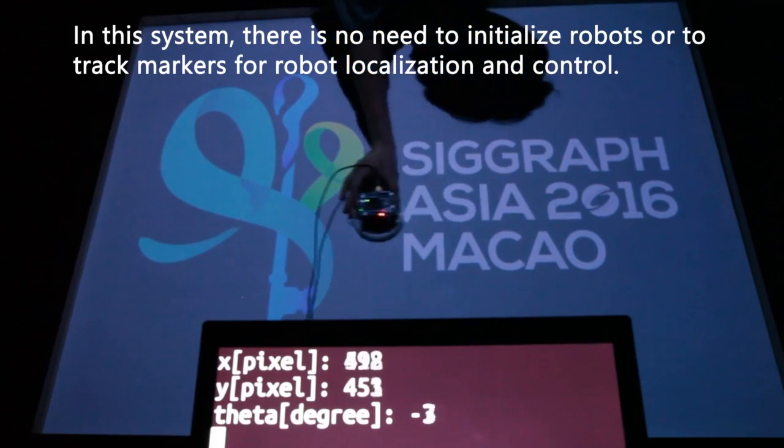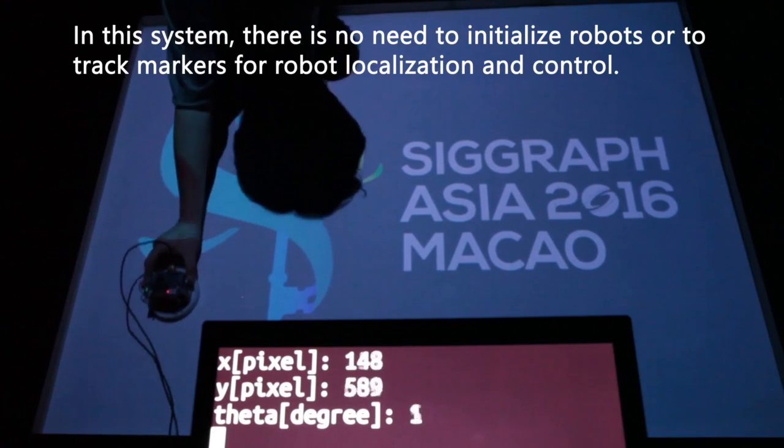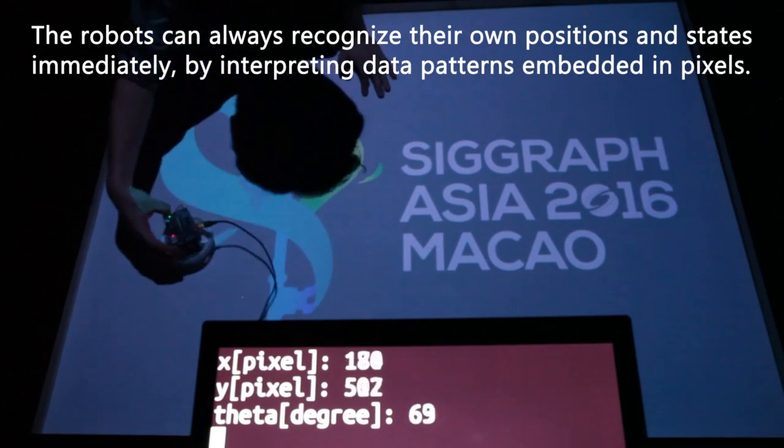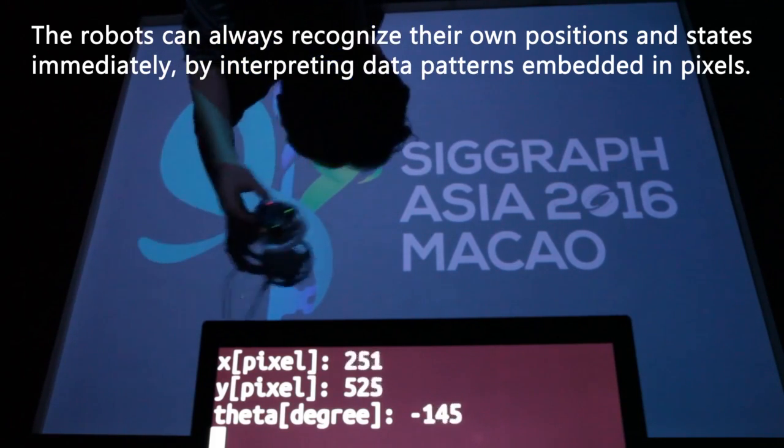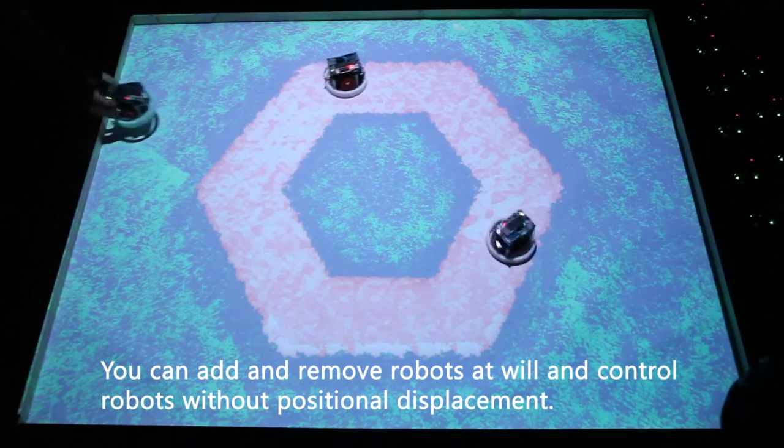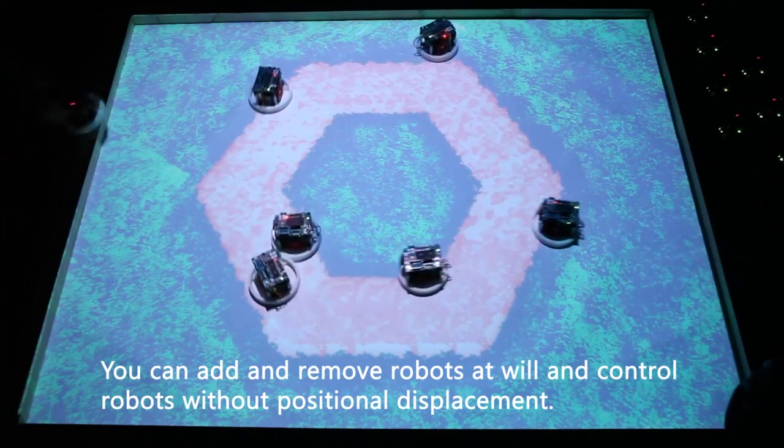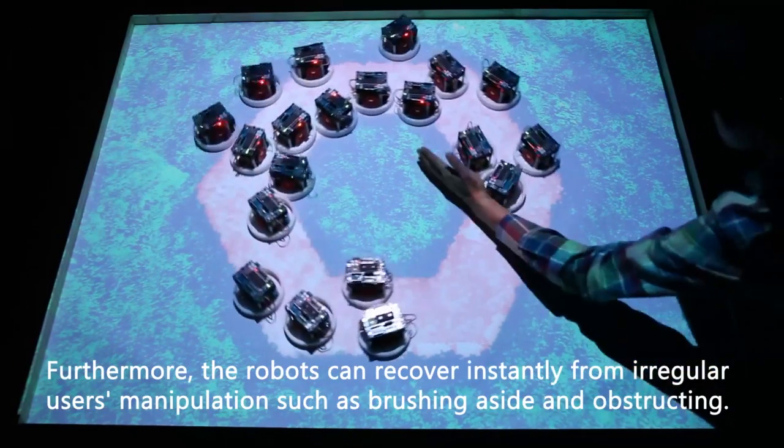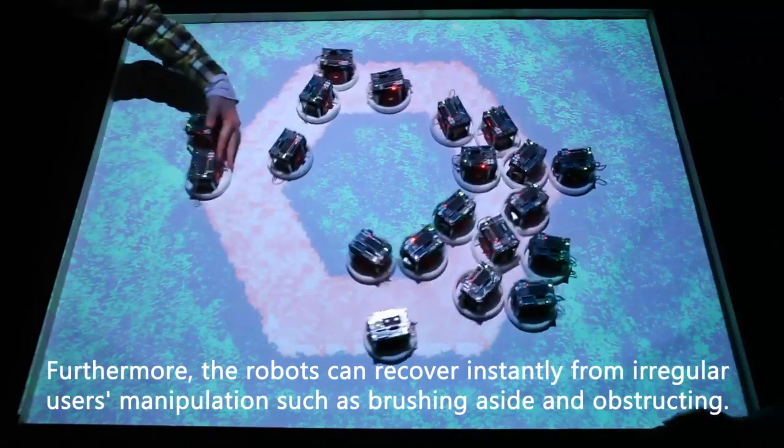In this system, there is no need to initialize robots or to track markers for robot localization and control. The robots can always recognize their own positions and states immediately by interpreting data patterns embedded in pixels. You can add and remove robots at will and control robots without positional displacement. Furthermore, the robots can recover instantly from irregular users' manipulation such as brushing aside and obstructing.